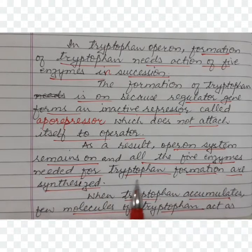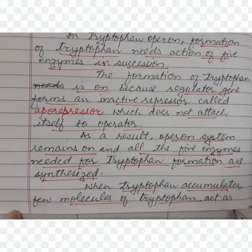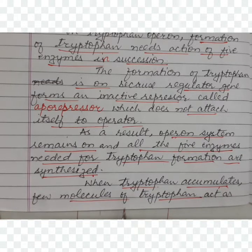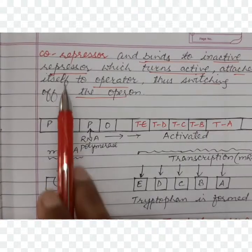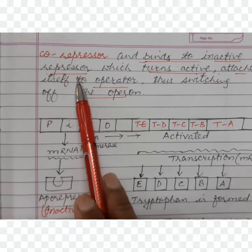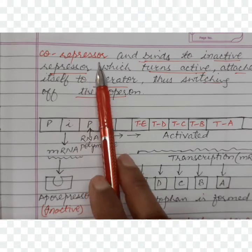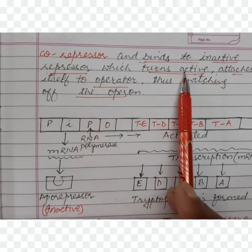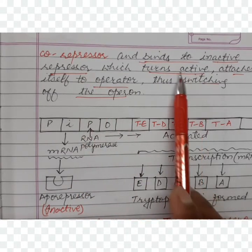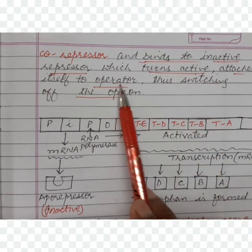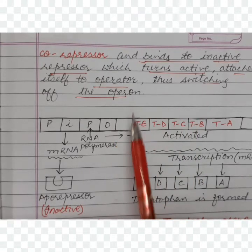But when tryptophan accumulates, a few molecules of tryptophan act as a corepressor and bind to the inactive repressor (aporepressor). This combination of aporepressor and corepressor becomes an active repressor, which then binds to the operator, switching off the operon.